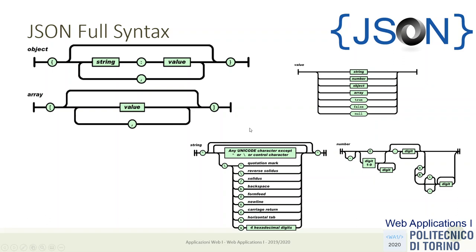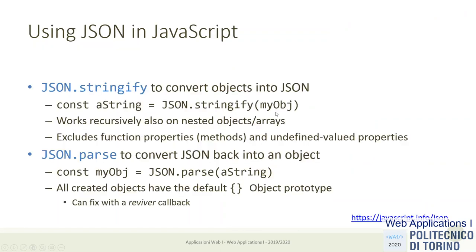JSON is a very simple format, but at the same time quite powerful because you can create nested descriptions of objects and arrays with arbitrary structure. Using JSON in every programming language is very easy because of the simplicity of the format — there are many libraries to help. In particular, in JavaScript there are two main functions in the standard library for converting objects to JSON and JSON to objects.